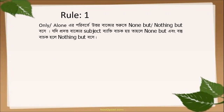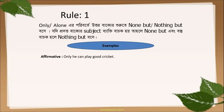Let's have some examples. In the first example, you can see: 'Only he can play good cricket.' This is an affirmative sentence and you can see the word 'only' in this sentence. So how can we change this affirmative sentence into a negative one? We can follow the above rule. By applying the above rule, we can change this sentence into a negative one.